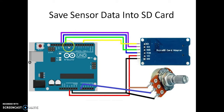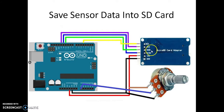Here is the connection. First you have to connect SS to pin 4 — you can connect SS with any pin from 2 to 10. Then you have to connect SCK to pin 13, MOSI to pin 11, and MISO to pin 12.